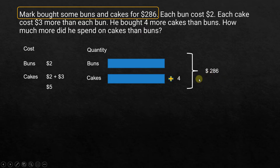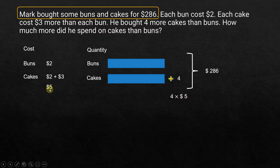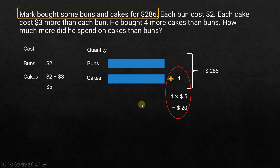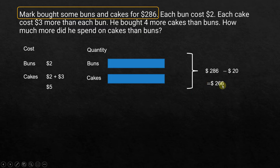We can see that the extra 4 cakes cost 4 times $5, which is $20. So the cost of the equal portion plus $20 equals $286. If we remove those extra 4 cakes from the left side of the equation, we subtract $20 from the right side as well. That reduces the total by $20, giving us $266.